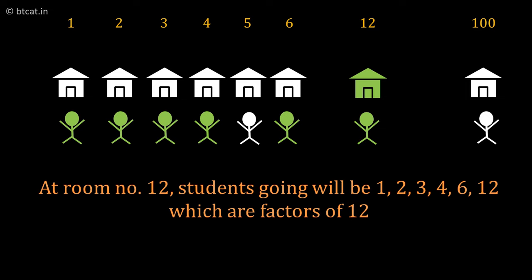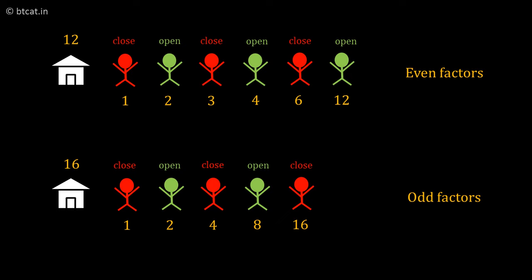This is a direct application of the perfect square concept. For any room number, the students who will visit that room are the factors of that number. For example, at room number 12, the students who visit are 1, 2, 3, 4, 6, and 12 — all the factors. If an even number of people visit a room, the room will remain open.